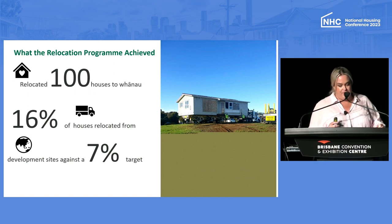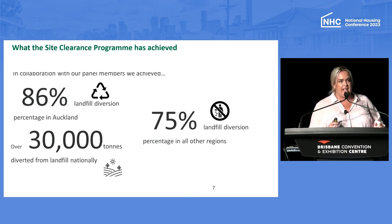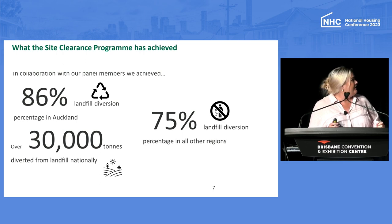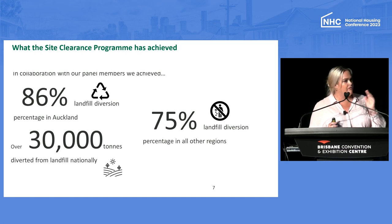Across our deconstruction and demolition activity, in Auckland last year we achieved 86% landfill diversion — that equated to over 30,000 tonnes diverted from landfill. We have tracked all the different types of material, what was disposed of and what wasn't. When I look back at where we were several years ago, this is measurable, it's tangible and it's making a real difference. We really want to see others follow suit. In the regions where we had a 60% target, we achieved 75% — over and above what we anticipated.